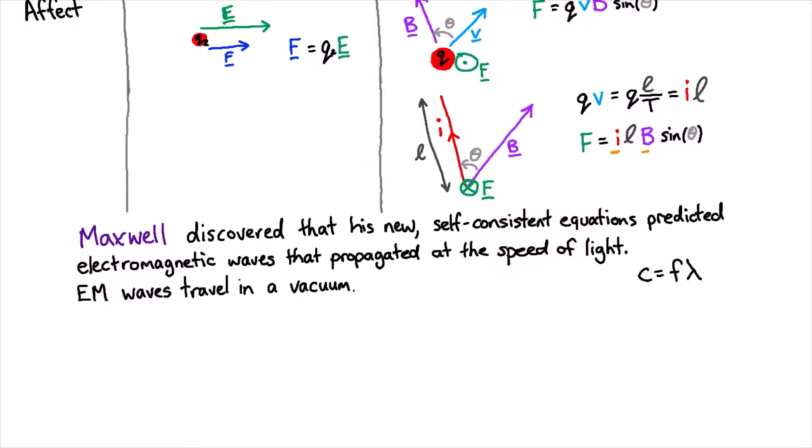The light that we're most familiar with, visible light, starts at a wavelength of around 700 nanometers for red light and goes down to something like 400 nanometers for violet light.